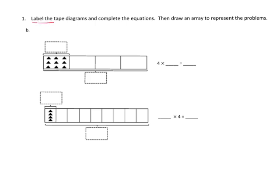In this problem we're being asked to label the tape diagrams and then draw the array that it represents. We can see there are nine triangles here, so we put a nine in this box. That means there's nine here, nine here, and nine here — four groups of nine.